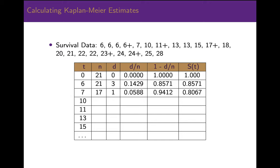Now let's consider what happens at time T equals 7 years. This is where we need to take censoring into account, because one person survived until 6 years but was then censored. So at T equals 7, the number of people at risk is 21 minus the 3 who died at 6 years minus the one person who was censored after 6 years, which leaves 17 people. Of those 17 at risk, one person died. The risk of death is 1 divided by 17, the risk of not dying is 1 minus 0.0588 which is 0.9412, and the cumulative risk of surviving is 1 times 0.8571 times 0.9412, which equals 0.8067, or about 81%.